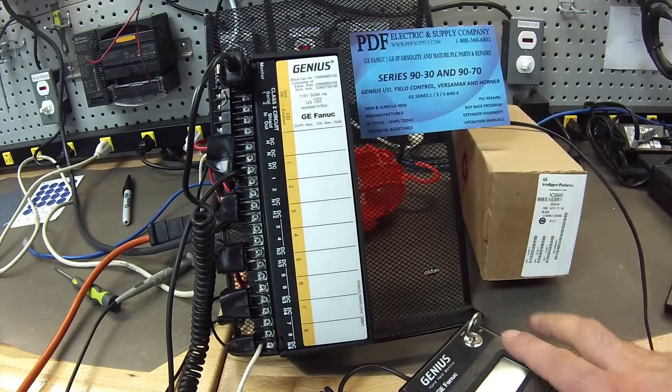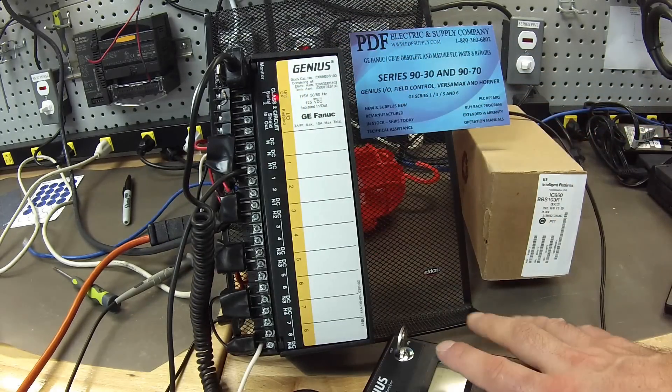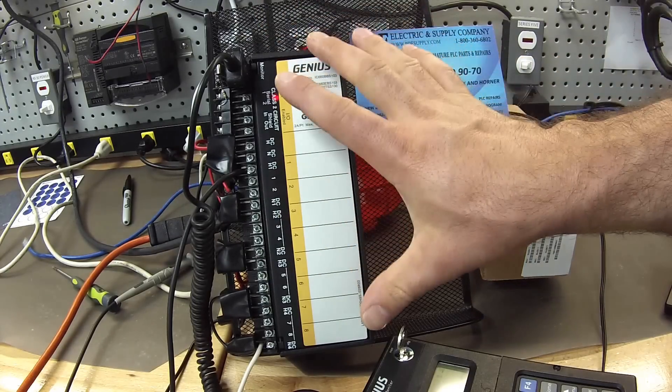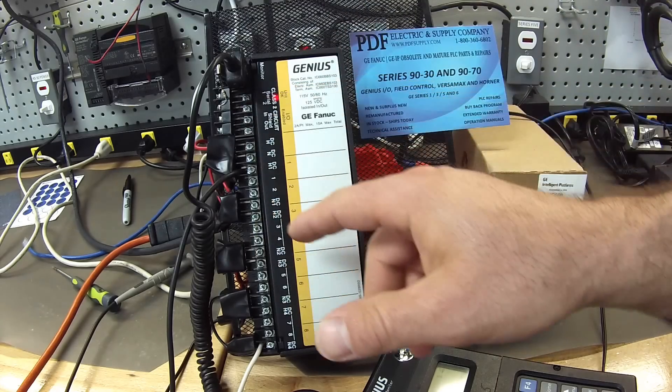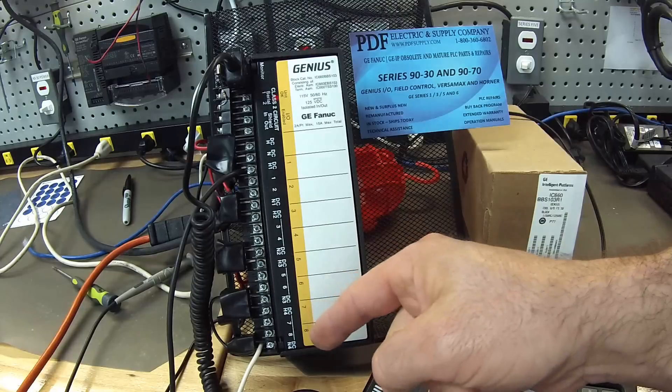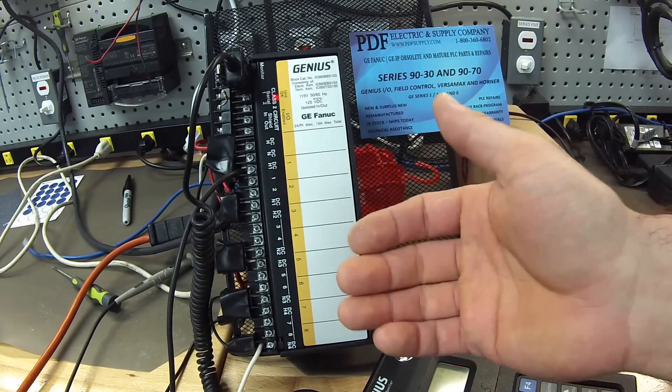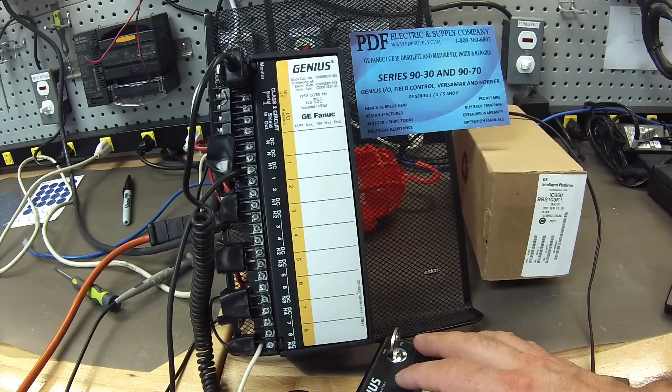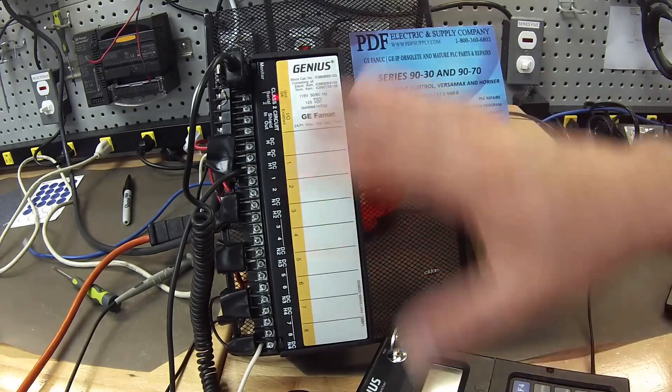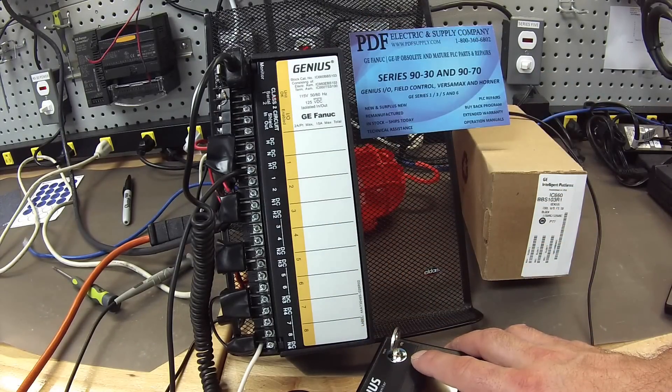Or the handheld monitor, the IC660HHM501, is unable to store information to the Genius Block to configure it and program it. Or if the serial port is not working, perhaps you go to touch an input and that's not working, or the light stays on but it's not giving any indication that there is an input working. It may give you an error in the handheld monitor called failed switch.